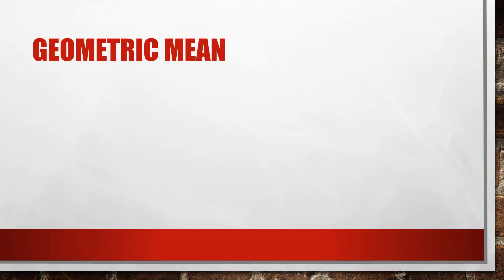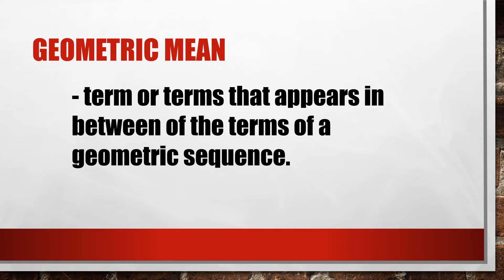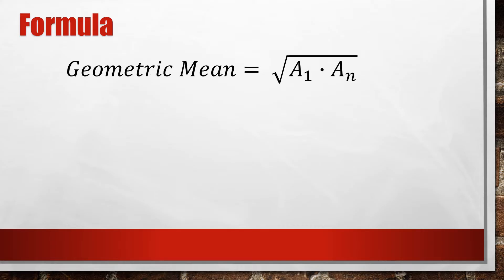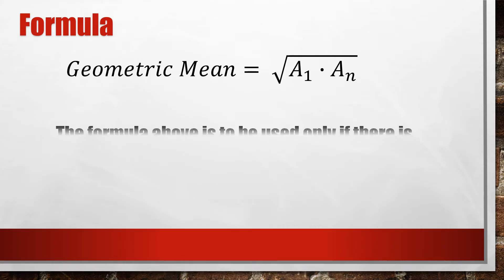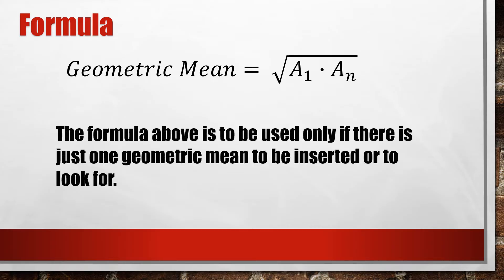Geometric mean. So what is a geometric mean? Similar to the idea of arithmetic mean, a geometric mean is a term, or could be terms, that are inserted in between the terms of a geometric sequence. Whenever we are looking for a geometric mean of a given sequence, we may use the formula: the square root of a sub 1 times a sub n. Keep in mind that we only use this formula if we are looking for a single geometric mean, or if we are to insert a single geometric mean.